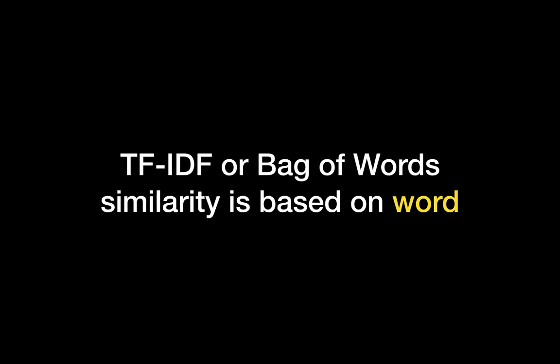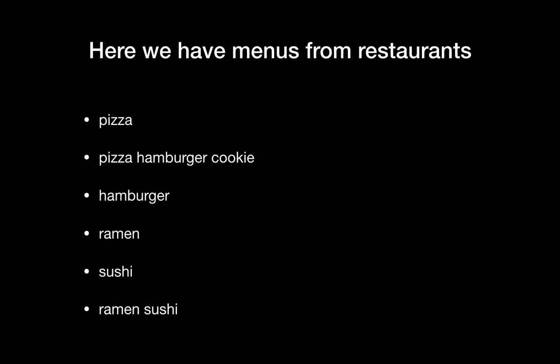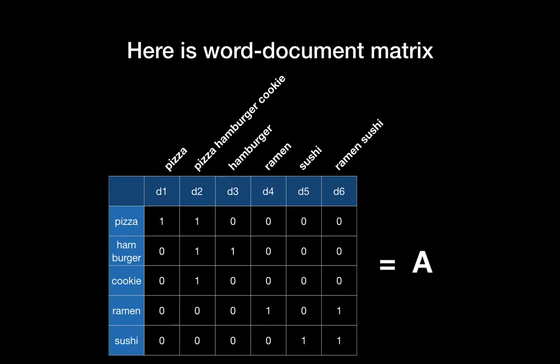So why does this happen? That's because TF-IDF or bag of words similarity is based on the word. But if we are talking about American food or Japanese food, these are actually topics. TF-IDF or bag of words similarity is not based on topic. Today's takeaway: LSA similarity is based on the topic.